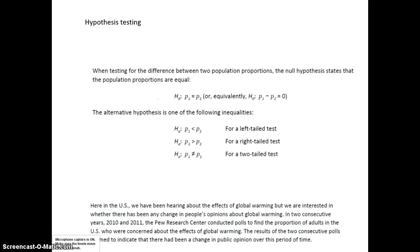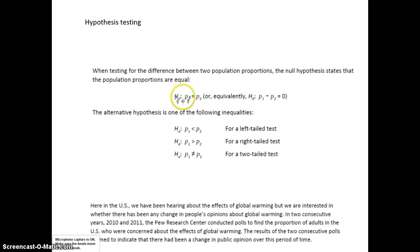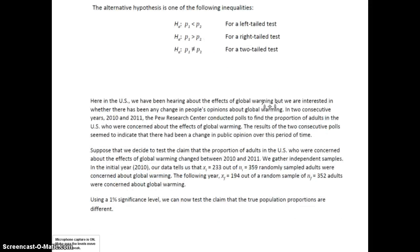For hypothesis testing, the alternative hypothesis is one of the following: either p1 is less than p2, p1 is greater than p2, or p1 is not equal to p2. The null hypothesis is always equality — p1 equals p2 — or equivalently, p1 minus p2 equals zero.